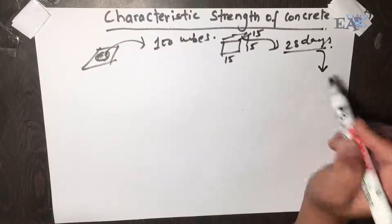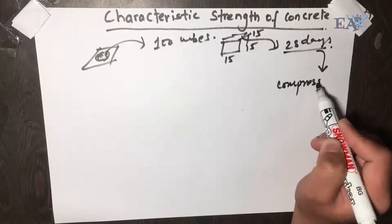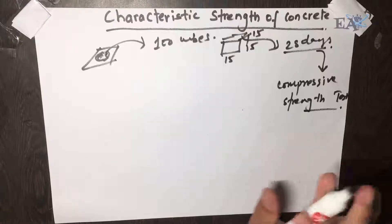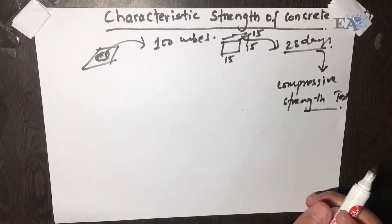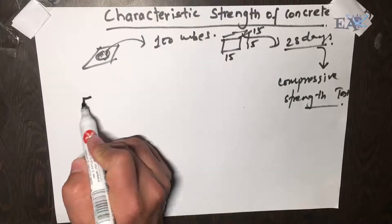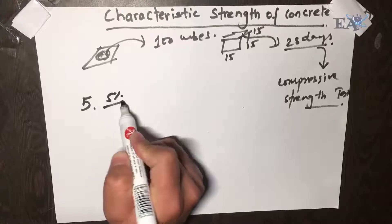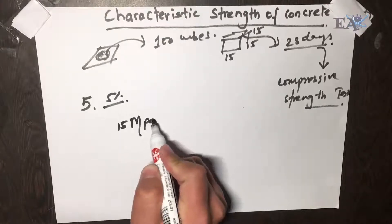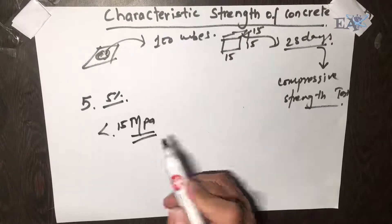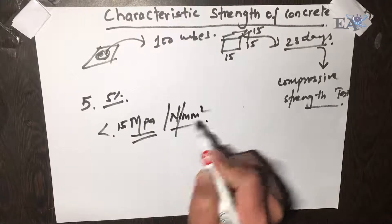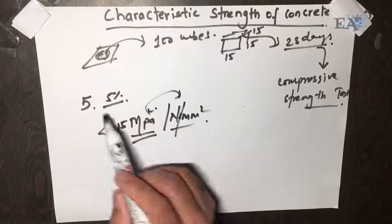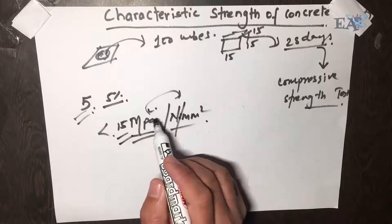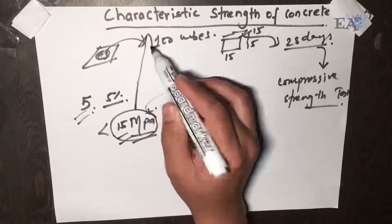After curing, we subjected these cubes to the compressive strength test and got our results. Out of these 100 cubes, five cubes — that is five percent — have a compressive strength value less than 15 MPa, where MPa is megapascal, equivalent to newton per mm². In this case, 15 MPa is known as the characteristic strength of this batch of concrete.